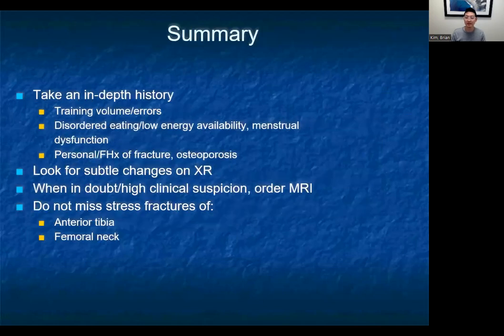In summary, take a great history, ask about training volume or errors, and ask about signs or symptoms of the female or male athlete triad. There are a lot of subtle changes on x-ray that may not be apparent at first glance, so look carefully, zoom in, and talk to your radiologist if you can. If there is any doubt and persisting clinical suspicion, go ahead and order that MRI or CT. Certainly do not miss stress fractures of the anterior tibia and the femoral neck.